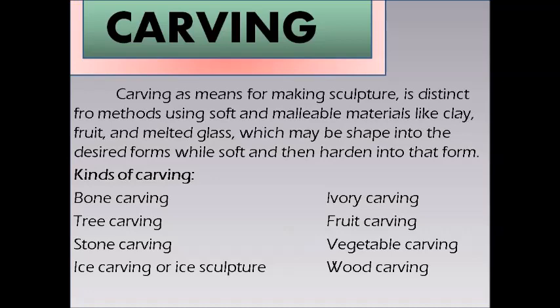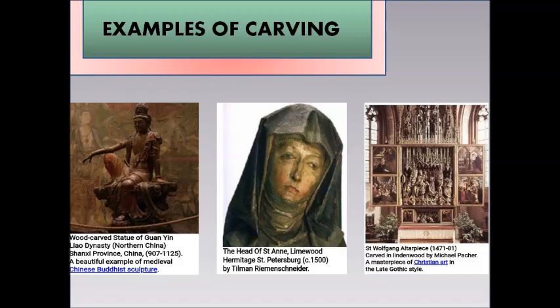Examples of carving include a wood-carved statue of Guan Yin from the Liao Dynasty in Northern China, Shanxi Province, circa 907 to 1125 — a beautiful example of medieval Chinese Buddhist sculpture. Also notable are the Head of St. Ann in Limewood by Tilman Riemenschneider, circa 1500, and the St. Wolfgang Altarpiece carved in 1471–1481 in Lindenwood by Michael Pacher, a masterpiece of Christian art in the late Gothic style. Famous examples also include Mount Rushmore and the Pietà.